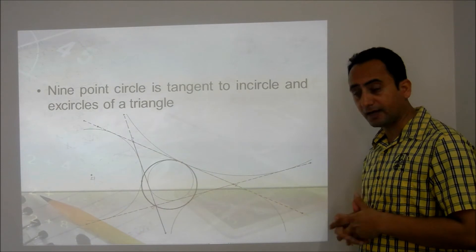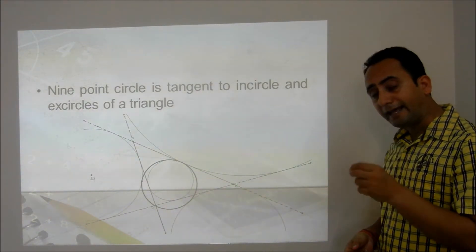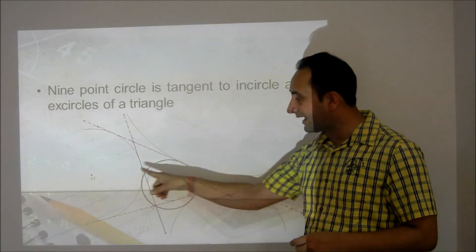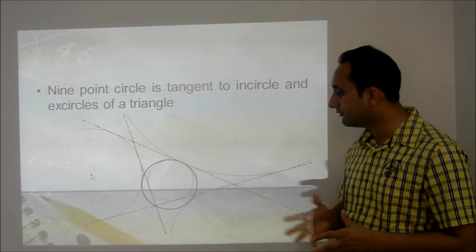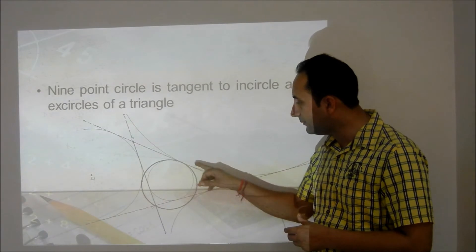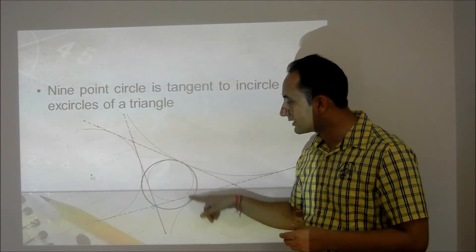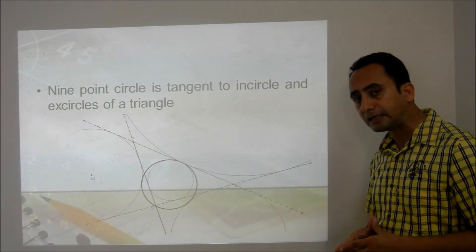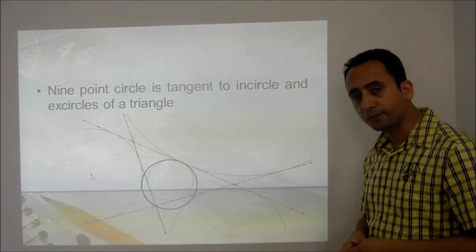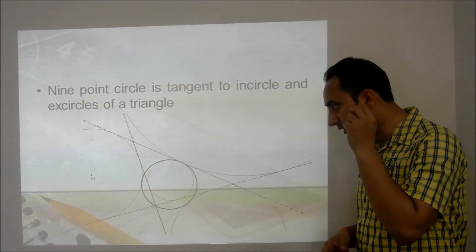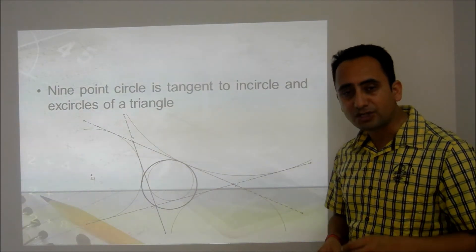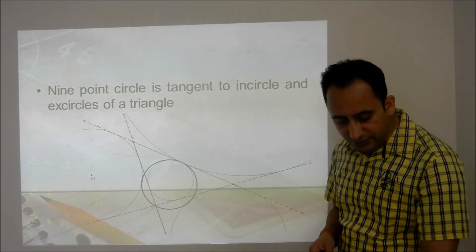The 9-point circle is tangent to all 3 excircles of the given triangle as well as to the incircle. This is Feuerbach's theorem: the 9-point circle will always be tangent to the incircle as well as the excircles. The 3 points of contact between the excircles and the 9-point circle are what make it a 12-point circle.